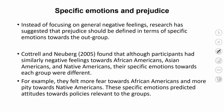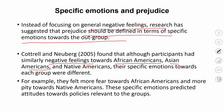Some researchers say that instead of focusing on general negative or positive feelings, prejudice should be defined in terms of specific emotions towards the out-group. Cottrell and Neuberg (2005) found that although participants had similar broadly negative feelings towards African-Americans, Asian-Americans, and Native Americans, their specific emotions towards each group were very different.